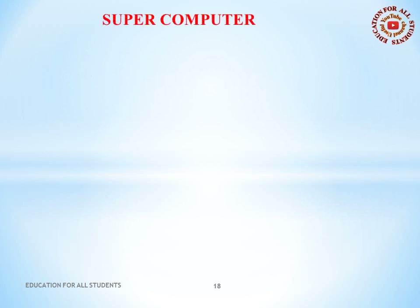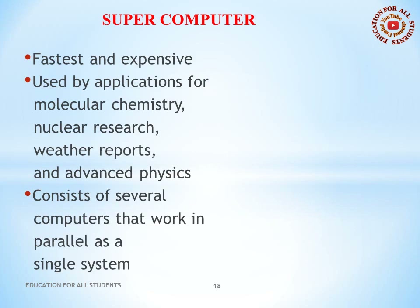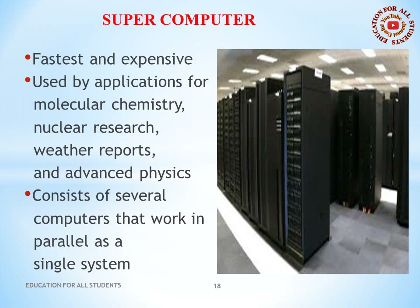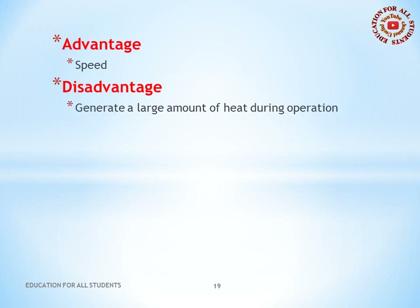Supercomputers are the fastest and most expensive type of computer. They are used by applications for molecular chemistry, nuclear research, weather reports, and advanced physics. A supercomputer consists of several computers that work in parallel as a single system. Advantage: speed. Disadvantage: generates a large amount of heat during operation.